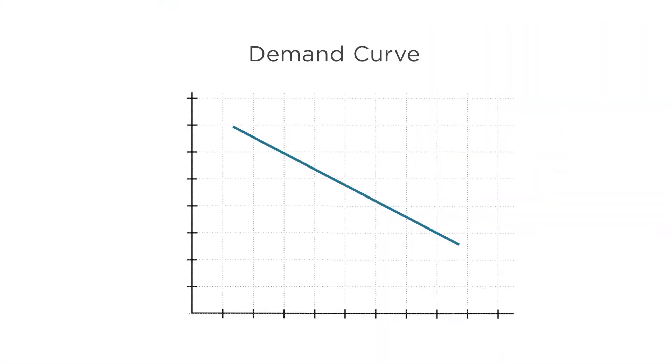Remember that the demand curve shows the relationship between the price of a good and the quantity demanded. We've been talking a lot about pizza and cookies, and how the prices — and more specifically the price ratio — influence how much pizza and how many cookies you want to consume. But the demand curve is just about one good, so we need to look at what happens to demand as one price changes while the other prices stay constant.